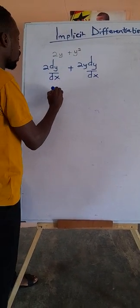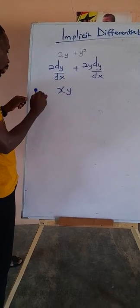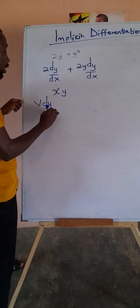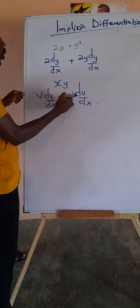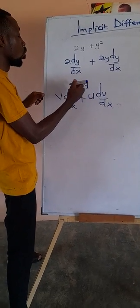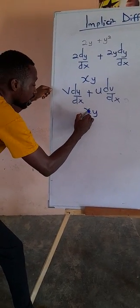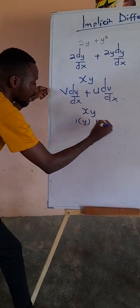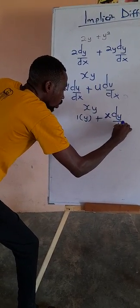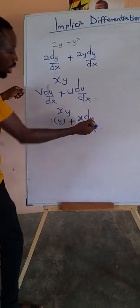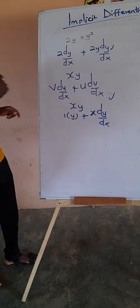Also, if we have a product like xy, we use the product rule. Remember the product rule: v times du/dx plus u times dv/dx — we keep v and differentiate u, plus we keep u and differentiate v. So for xy, we keep x and differentiate y, and keep y and differentiate x. So for xy: differentiating x gives 1, so 1 times y. Plus, we keep x and differentiate y, giving dy/dx, so 1 times dy/dx. This helps us to do implicit differentiation very, very well.